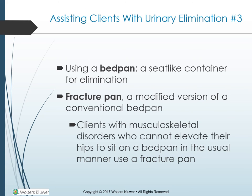Using a bedpan: a bedpan is a seat-like container used to collect urine or stool, usually made of plastic and several inches deep. A fracture pan — a modified version — is flat on the sitting end rather than rounded, and is used by clients with musculoskeletal disorders who cannot elevate their hips. When a client confined to bed needs to eliminate, the nurse places the bedpan under the buttocks. See Skill 30-1 and page 699 for pictures.